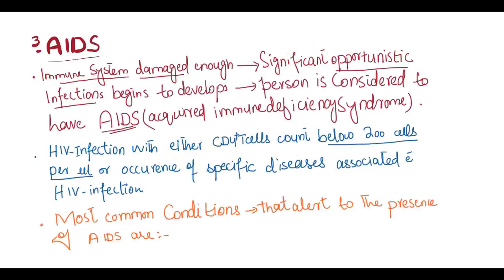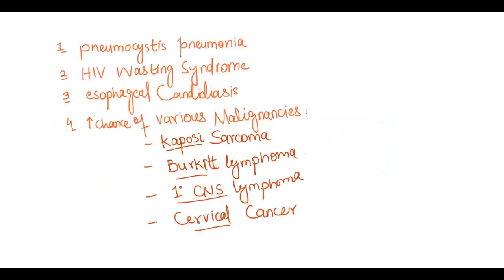AIDS: When the immune system is damaged enough that significant opportunistic infections begin to develop, the person is considered to have AIDS. It is defined as HIV infection with either a CD4 T cell count below 200 cells per microliter or occurrence of specific diseases associated with HIV infection. Most common initial conditions include Pneumocystis pneumonia, HIV wasting syndrome, and esophageal candidiasis. People with AIDS have an increased chance of developing malignancies like Kaposi sarcoma in 10–20% of patients, Burkitt lymphoma, primary CNS tumors, and cervical cancer.